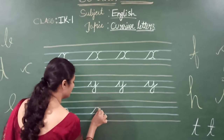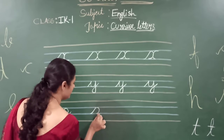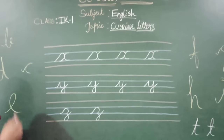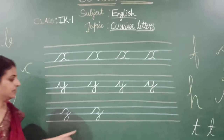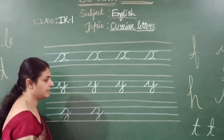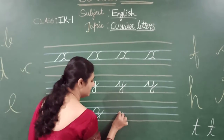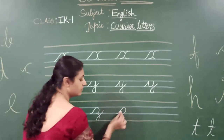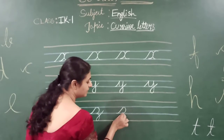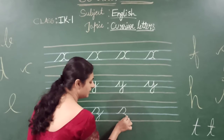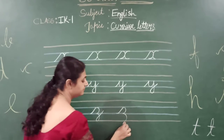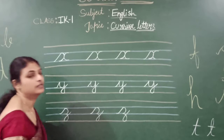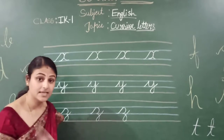Slant, curve, again backward curve. And again slant. This is the letter Z. Listen carefully children: slanting line, backward curve, again another backward curve. Make a slant. This is the letter Z.